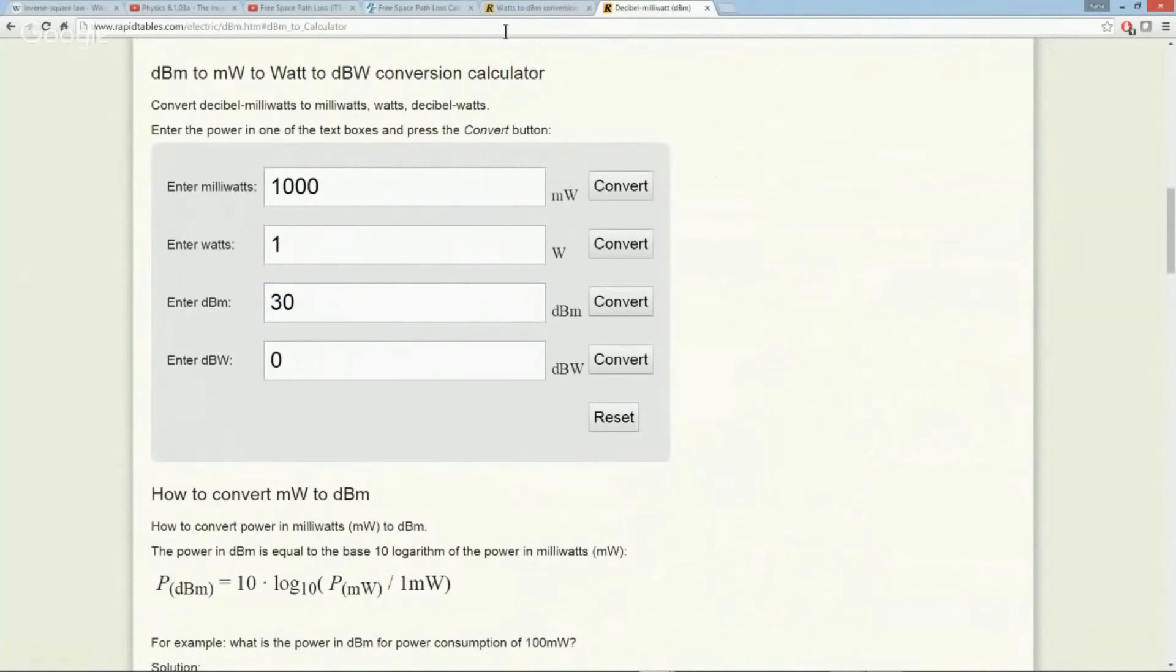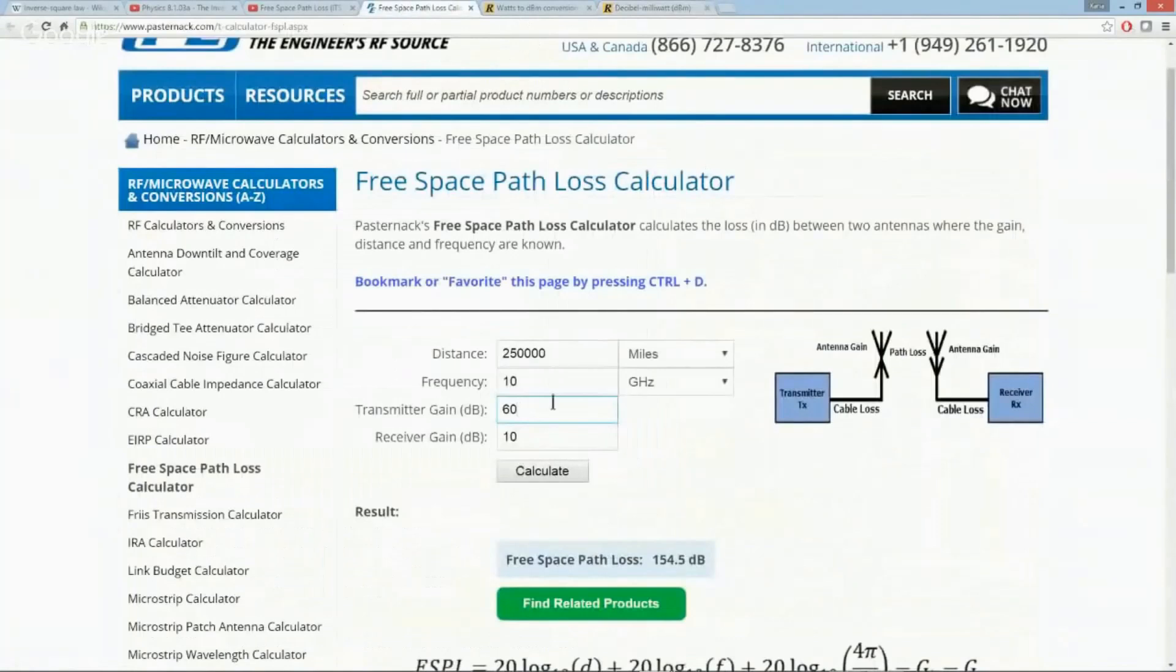What I'm going to do first of all is we're going to take this free space loss calculator and we're going to find out how much power we have to have to be able to transmit over certain distances. As you can tell here, I have already done a calculation of 250,000 miles, and I'm sure anybody that thinks about that—that would be equal to a one-way trip to the moon.